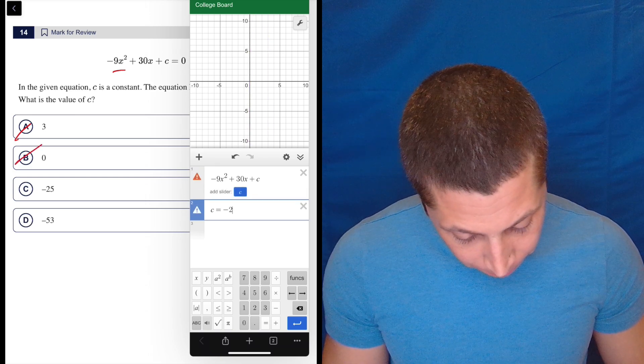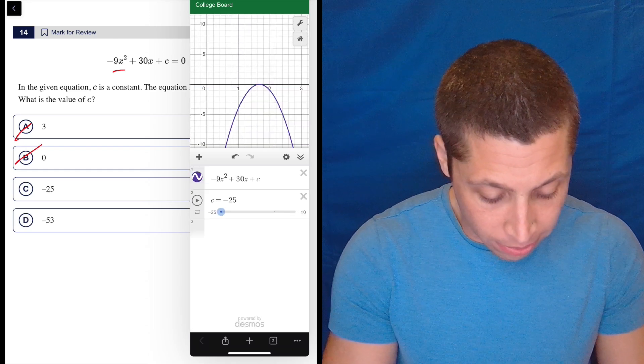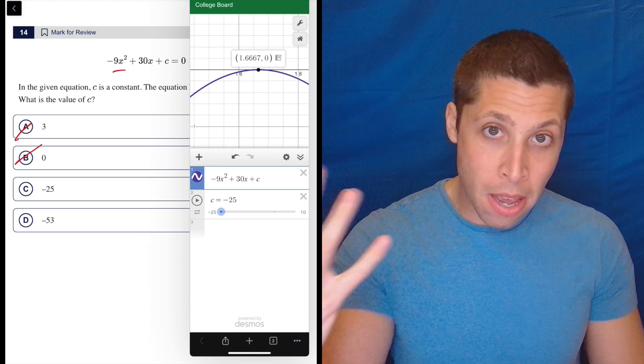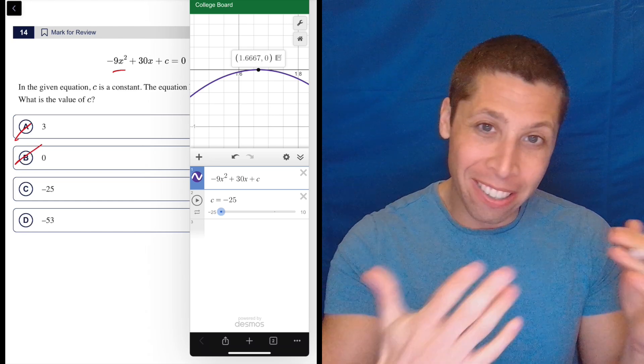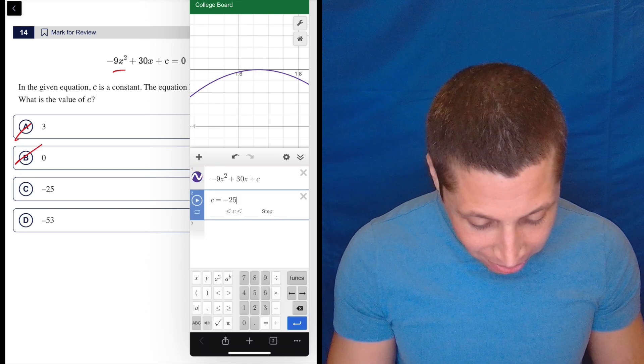Let's try negative 25. Oh, that looks pretty good. Now I could zoom in and see and yeah, it looks like one solution, right? One x-intercept looks like it's just bouncing. Maybe I got to zoom in really, really tight. And it's just missing or it's just kind of going over it.